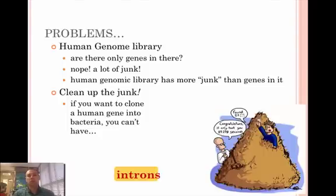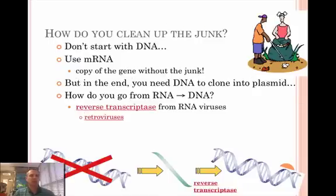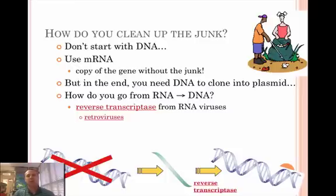Humans have a problem building a library like that because we have so much junk — we have all these introns that go in. And so when we cut it, they're all going to be a little bit different. How do we go about cleaning this up? Well, we go about cleaning this up by not starting with DNA, but starting with mRNA, because mRNA has the introns taken out. But we still need to get back to the DNA so we can put that into a plasmid to clone it. And we use reverse transcriptase — and if you remember, reverse transcriptase comes from RNA viruses. So we actually use some of their technology to benefit us.